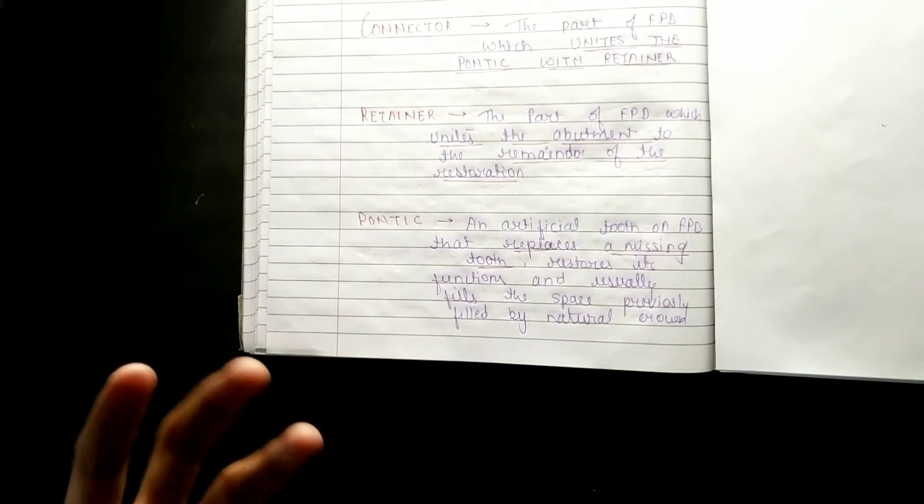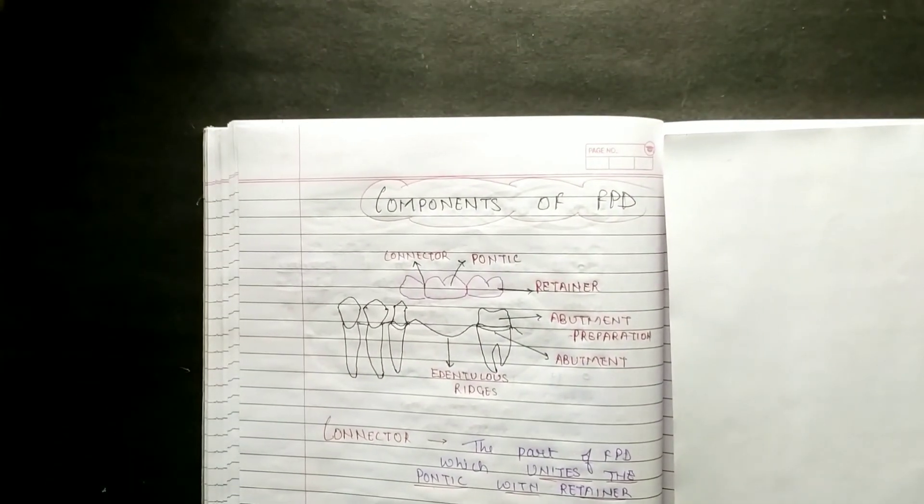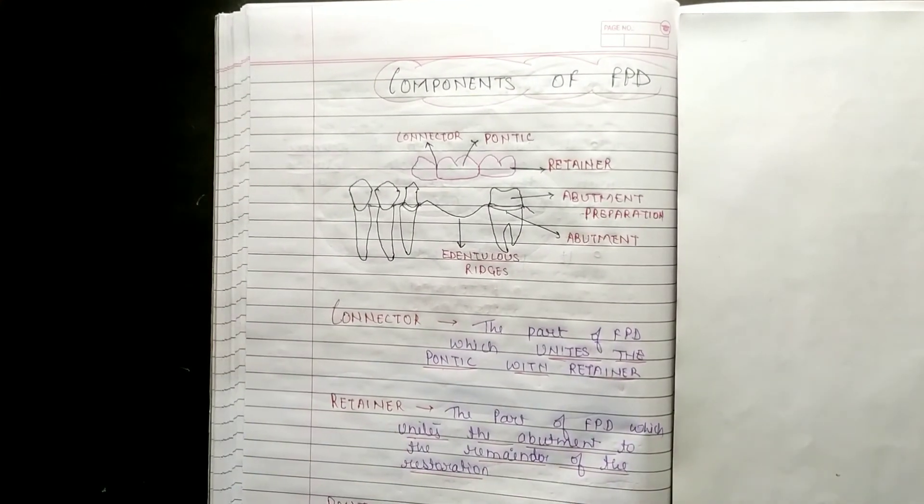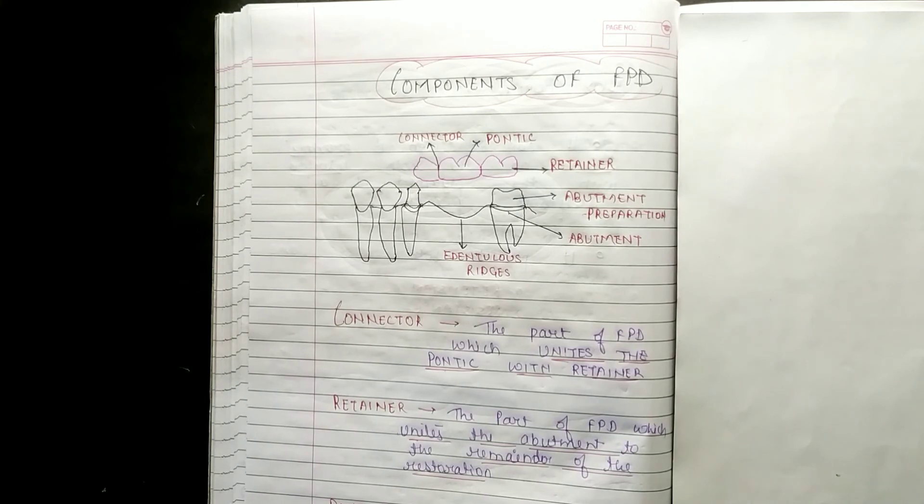So these are the components of the FPD. Now we will start with abutment, then retainer, connector, pontics and all, and we will finish the FPD. I hope this video will help you. Don't forget to subscribe to the channel. Thank you so much for watching.